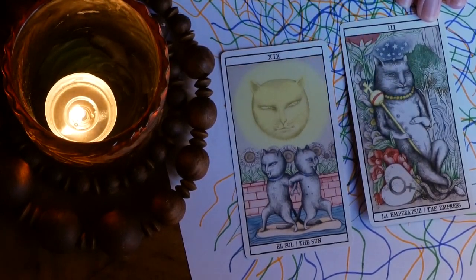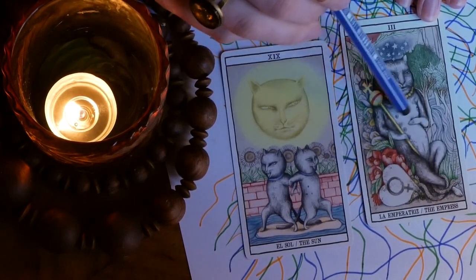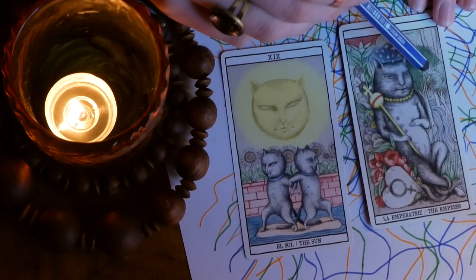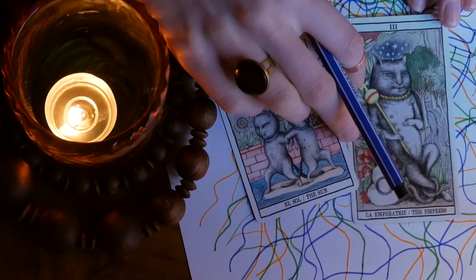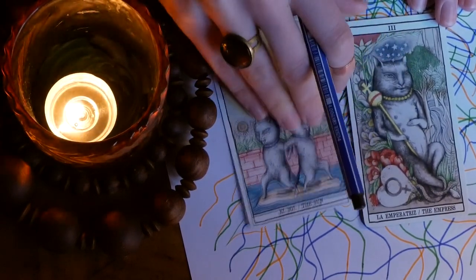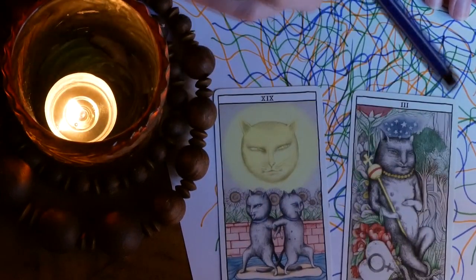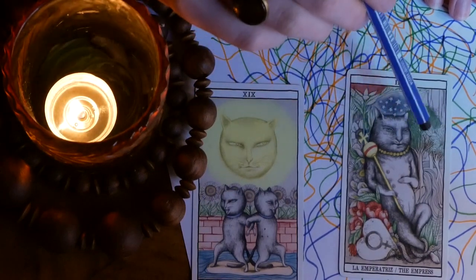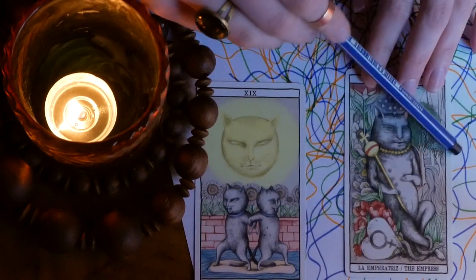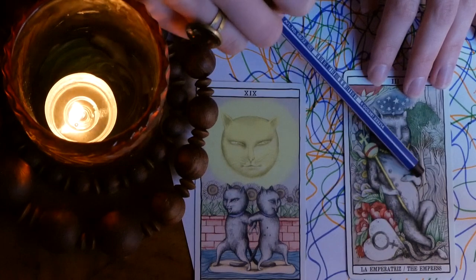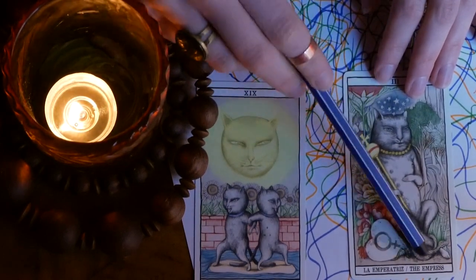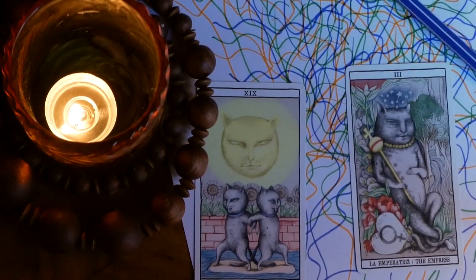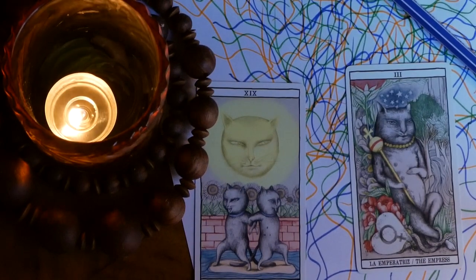The Empress. The Empress is here to assure you that you know best what it is that you need. You are the only authority on what it is that will help you grow and be happy. So don't worry about what anybody else is saying. Don't worry about how other people are trying to control you, if they are. It is absolutely 100% within your power to heal yourself.